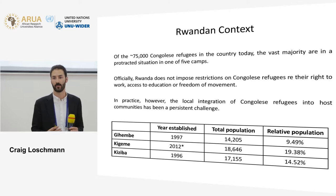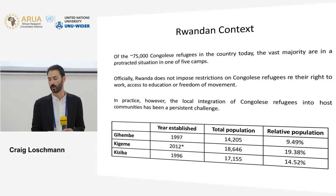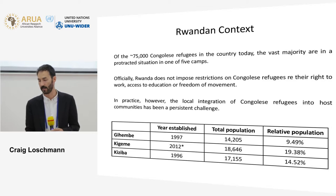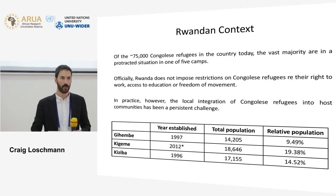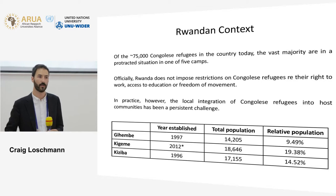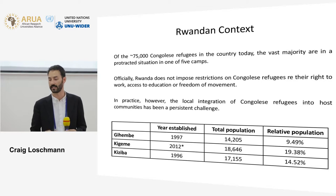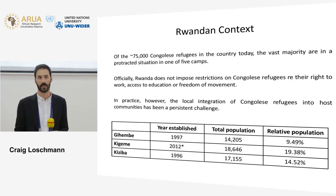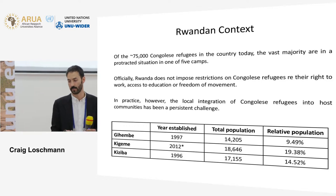Officially, and this is important for the premise of the whole study, the Rwandan government does not impose restrictions on Congolese refugees regarding their rights to work, access to education, or freedom of movement. So in principle, the Congolese population is able to leave the camp, find work, access land, and access education. In practice, however, local integration of Congolese refugees still remains quite a big obstacle, especially in host communities.